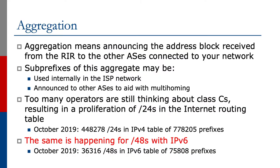Aggregation means announcing the address blocks received from the regional Internet registry to the other ASs connected to your network. Sub-prefixes of this aggregate may also be announced. They'll be used internally in the ISP network for ISP infrastructure or distributed for customer use. All these sub-prefixes may also be announced to other autonomous systems to aid with multi-homing, as we'll see later on in this series.